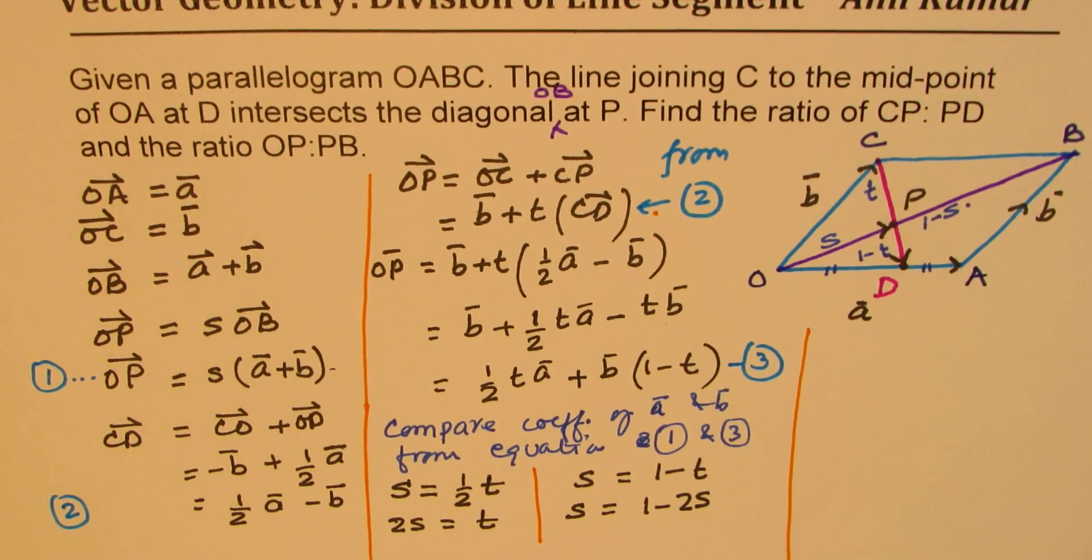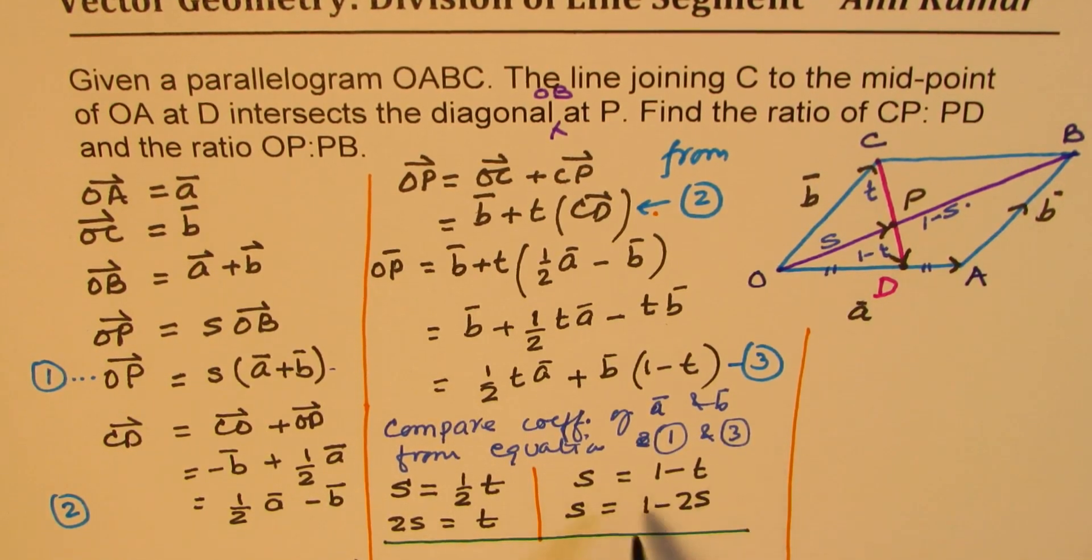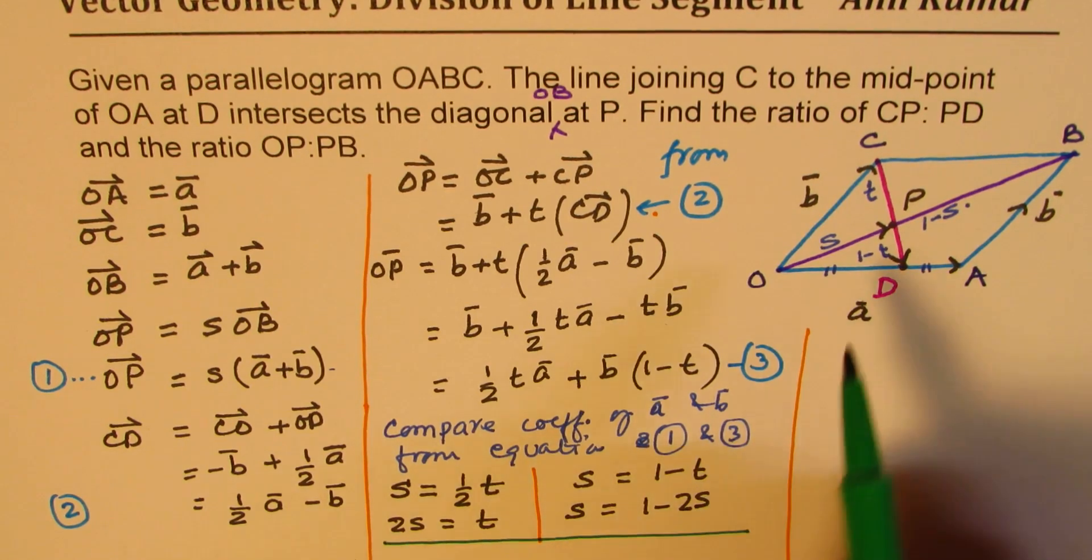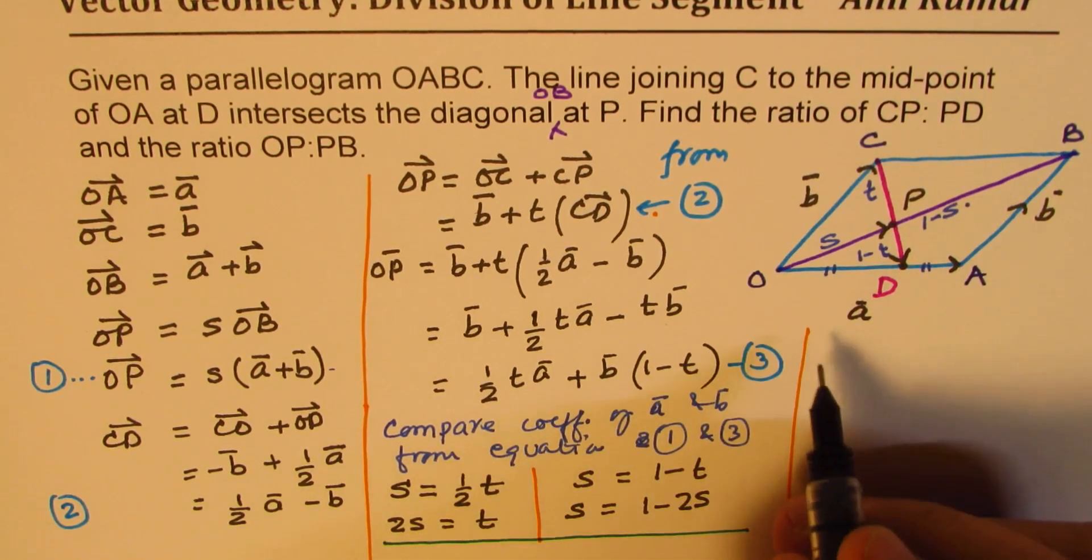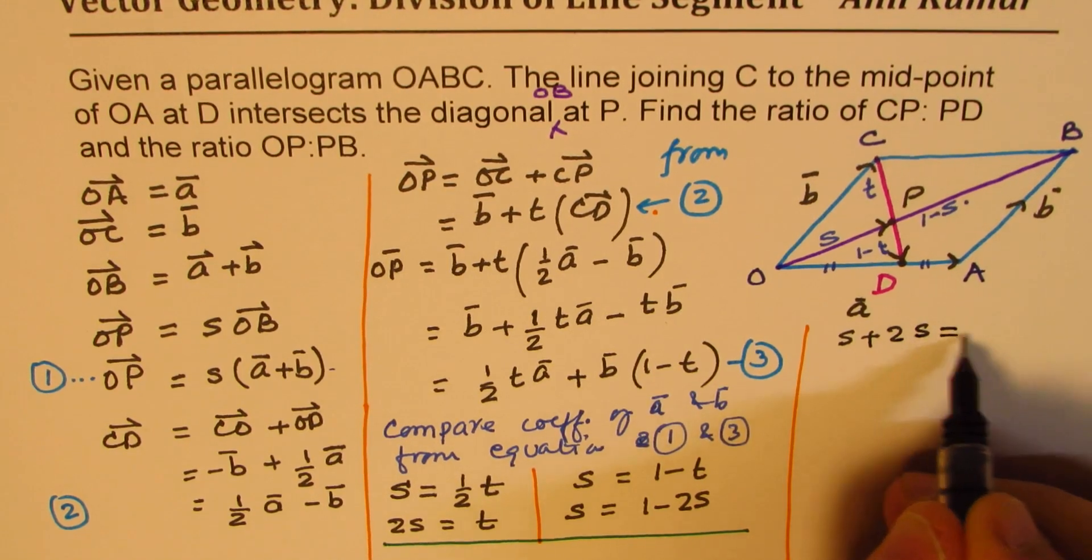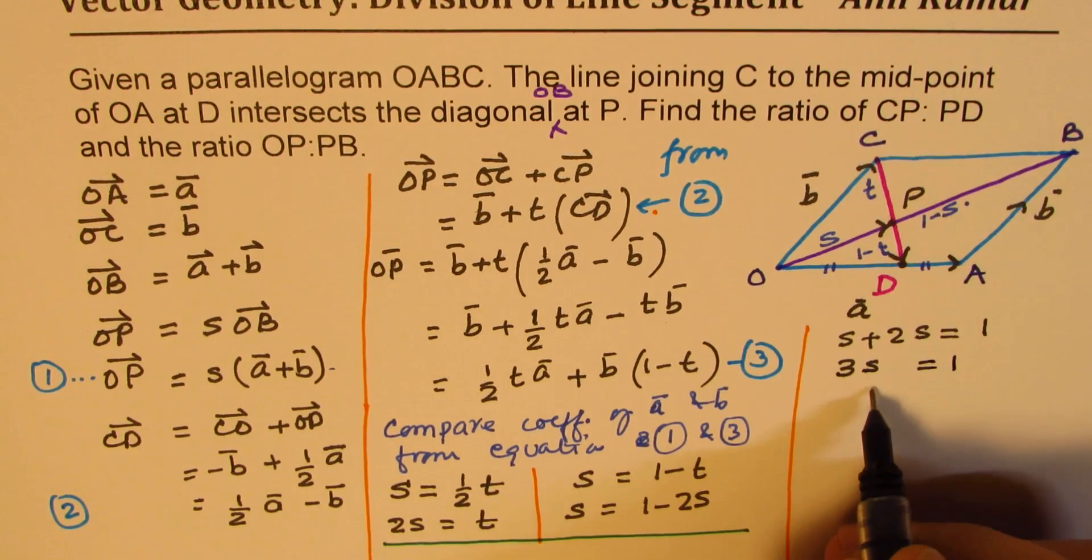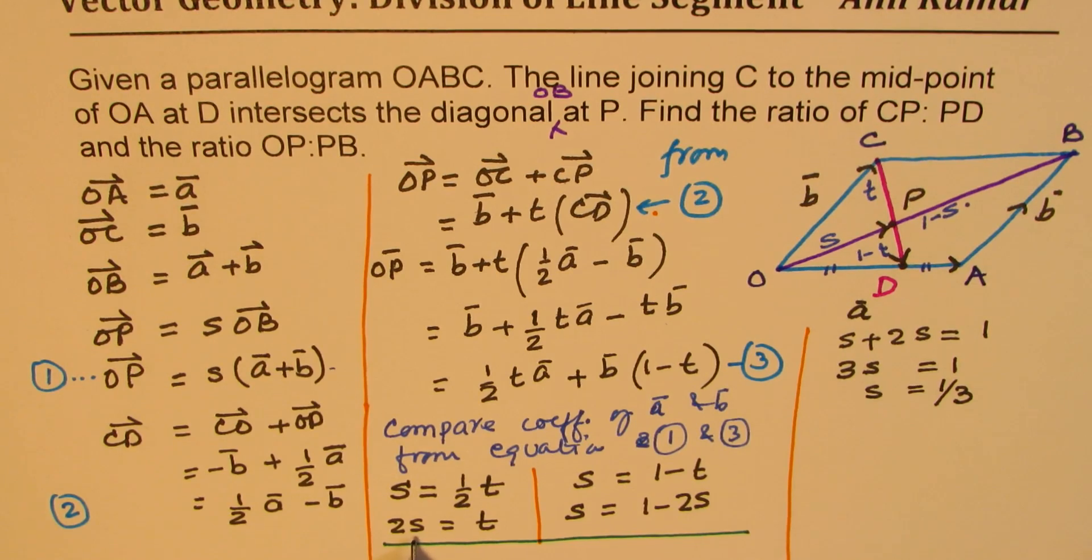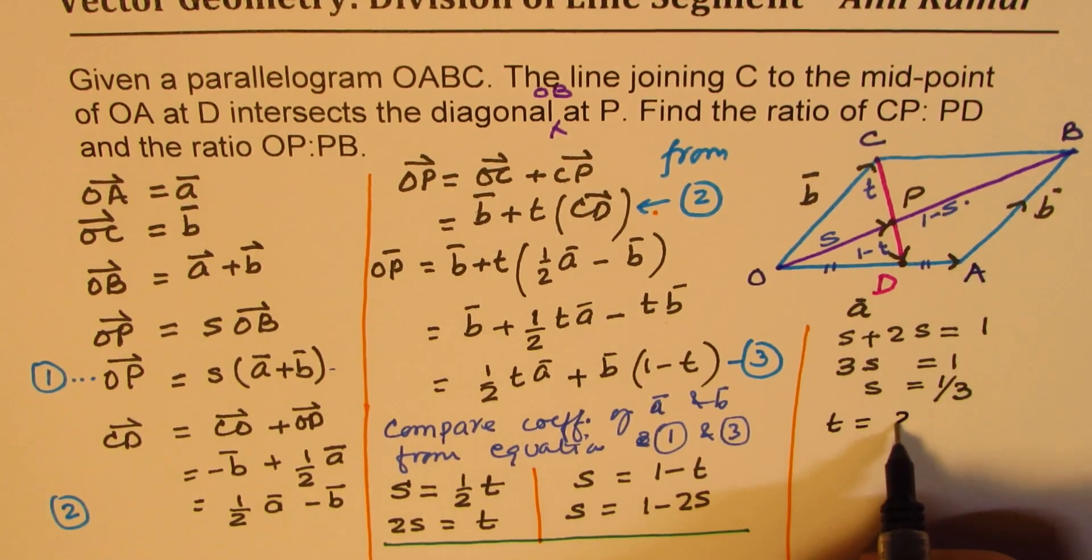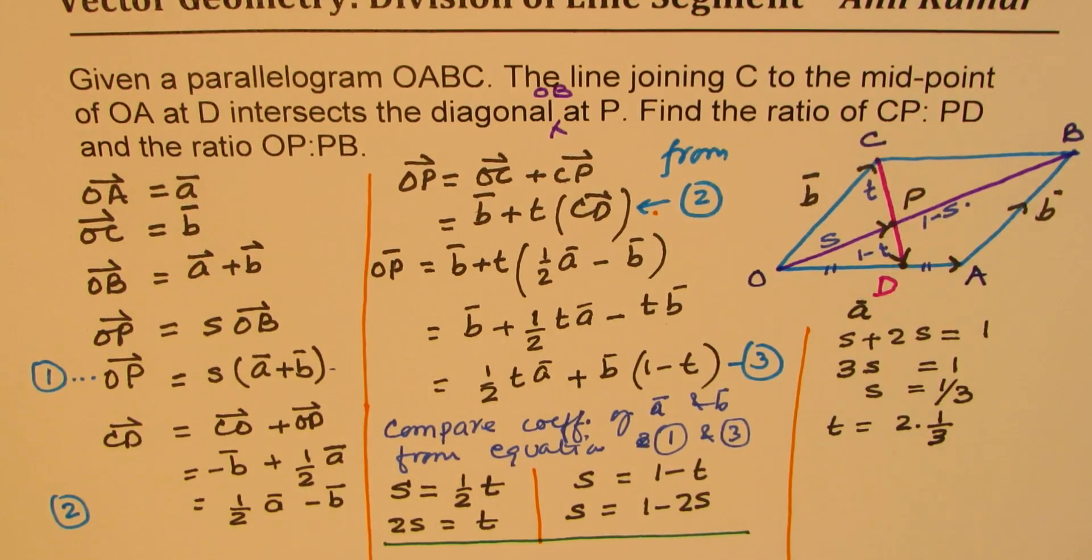So what we got here is the relation between S and T. We are going to use this to evaluate this particular ratio. So what do we get? We get, bringing 2S to the left side, we get S plus 2S equals to 1. And that means 3S equals to 1, or S equals to 1 over 3. Now, if I put S equals to 1 over 3, I get T equals to 2 times 1 over 3. So these are the two ratios which we get for S and T.